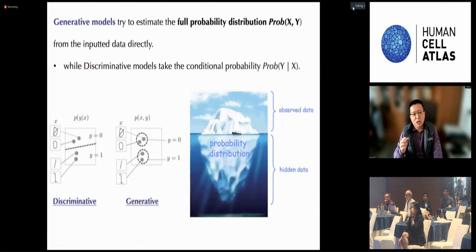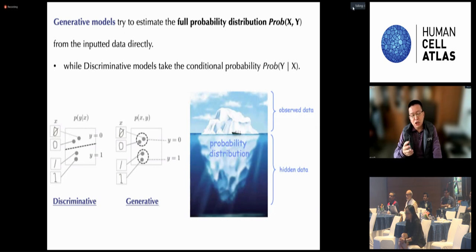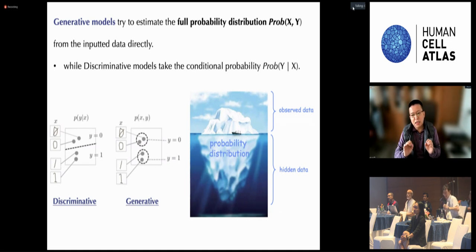Our idea is to model such complex systems through generative models computationally. We will try to estimate the full data probability distribution from input data directly. Such a task is hard because in the real world we cannot have the full data size as input. We need an additional assumption: that there is a low-dimensional latent space behind the high-dimensional observations. This latent space cannot be observed directly, but we can make our model learn from the observations, as the latent space is exactly what generated those observations.